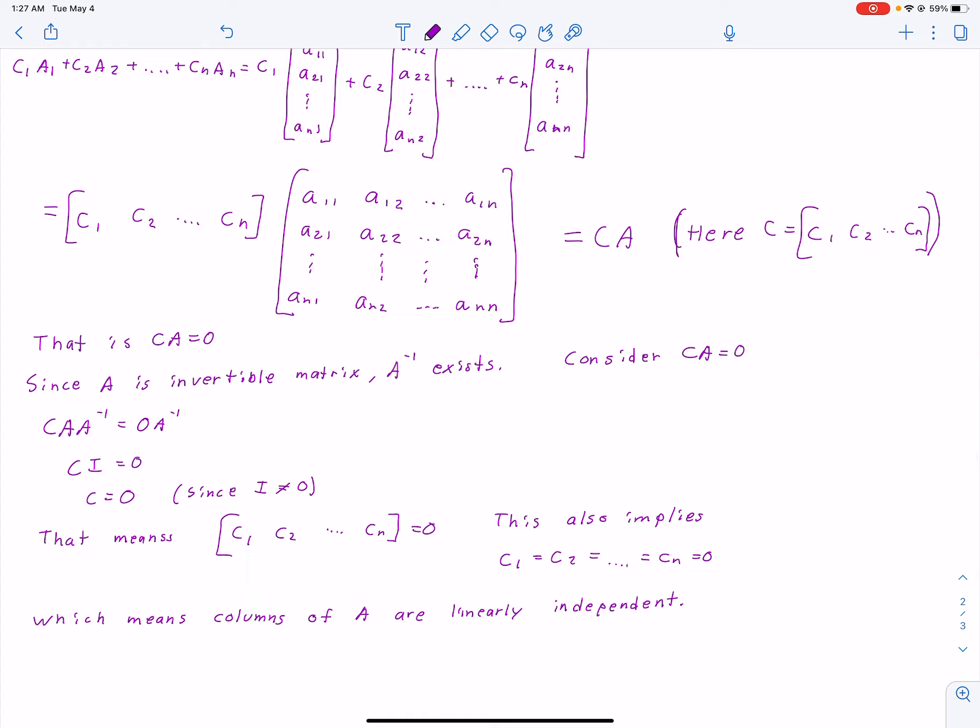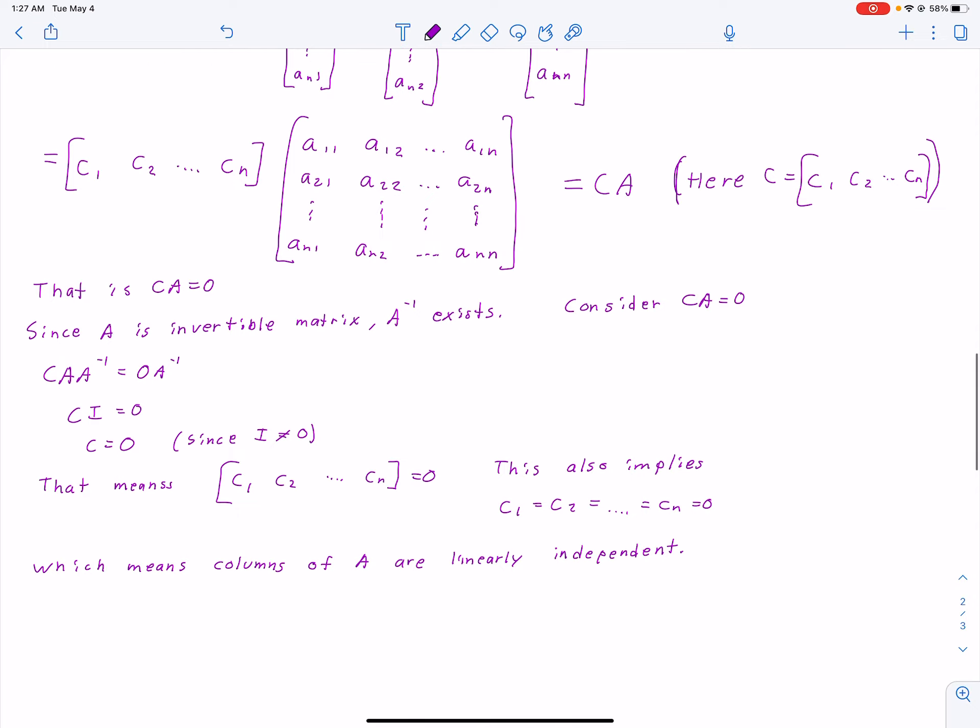Then, that is basically just CA equals 0. Since A is an invertible matrix, A inverse exists.